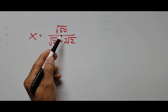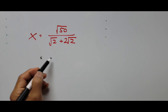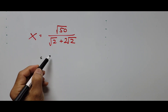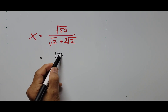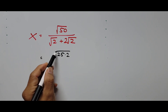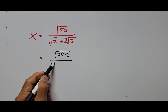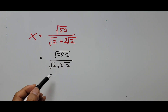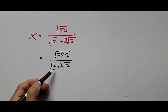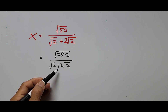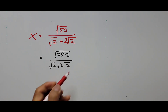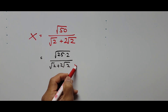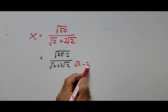First, we need to break down the square root of 50. The square root of 50 can be written as the square root of 25 times 2, over the denominator square root of 2 plus 2 times square root of 2. To get rid of this radical in the denominator, we have to multiply by its conjugate. The conjugate uses the same terms but with the opposite sign — positive becomes negative — so the conjugate is square root of 2 minus 2 square root of 2.